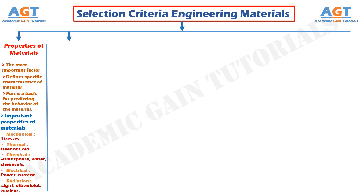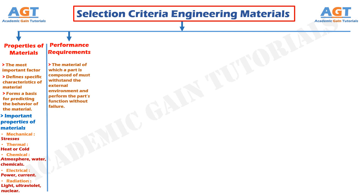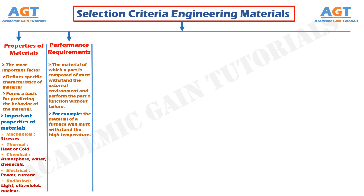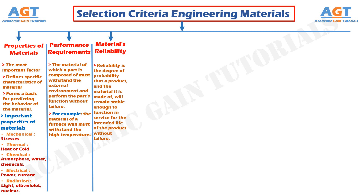Performance requirements: the material of which a part is composed must be able to withstand the external environment and perform the part's function without failure. For example, the material of a furnace wall must withstand high temperature. We also need to consider the material's reliability. Reliability is the degree of probability that a product and its material will remain stable enough to provide service for the intended life of the product without failure.